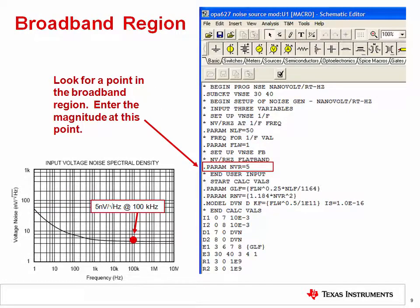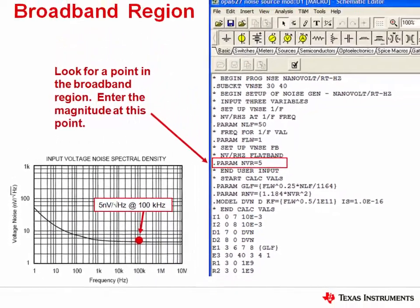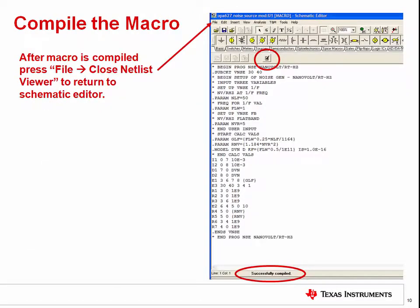The broadband region only requires one entry in the model. The voltage noise spectral density in nanovolts per root hertz in the broadband region is entered under the parameter NVR. In this example, the broadband noise is 5 nanovolts per root hertz, so NVR is set to 5. Note that the frequency does not need to be entered, because broadband noise is constant over frequency. The final step for the voltage noise source is to click the compile checkbox. If the updated netlist has no errors, you will see the message 'successfully compiled' at the bottom of the window. Once the macro is compiled, click File, then Close Netlist Viewer to return to the schematic editor.